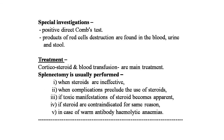Special investigations in AIHA: positive direct Coombs test; products of red cell destruction are found in blood, urine, and stool. Treatment: corticosteroids and blood transfusion are the main treatments. Splenectomy is indicated when steroids are ineffective, when complications preclude steroid use, when toxic manifestations of steroids become apparent, when steroids are contraindicated, or in cases of warm antibody hemolytic anemia.